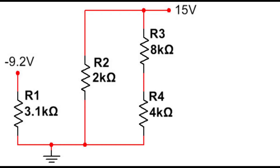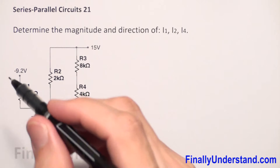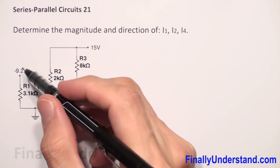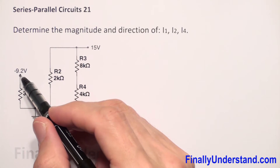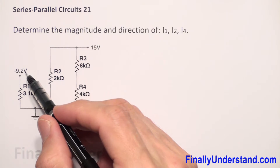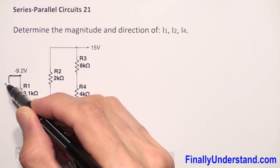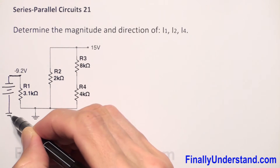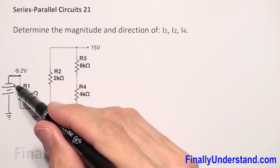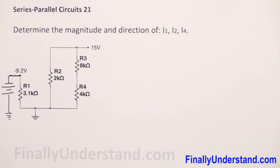Let's take a look at this example. We're supposed to find I1. Please notice that resistor R1 is connected directly to the voltage source, and we have voltage at this voltage source of negative 9.2 volts. Over here we have a voltage source, and this is my ground. As you can see, this voltage source is connected directly to resistor R1.